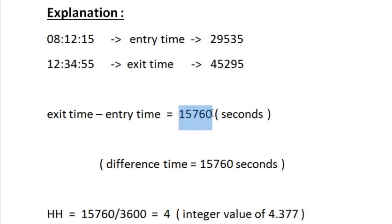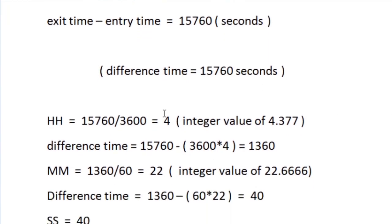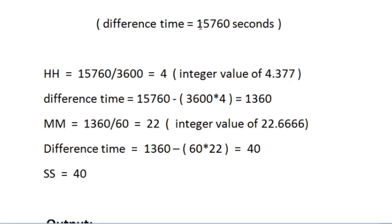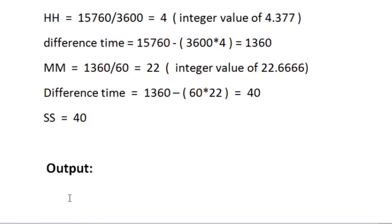Now we convert those seconds into hour-minute-second format by performing the reverse operation. To convert hours to seconds we multiplied by 3600, so here we divide instead. Dividing 15760 by 3600 gives 4.377. We take only the integer part, which is 4 — meaning there are 4 hours in 15760 seconds.